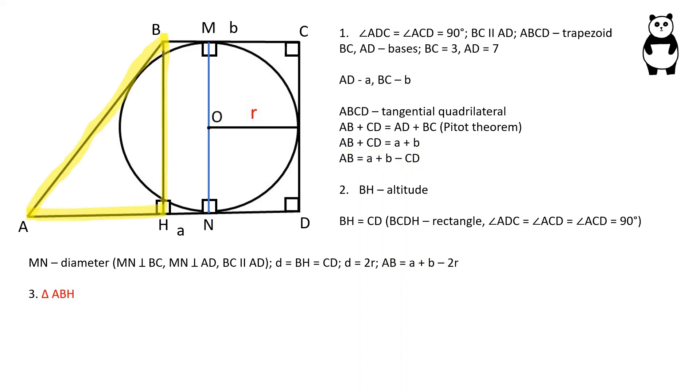Let's review the triangle ABH. Using the Pythagorean theorem, we can determine that AB squared is equal to BH squared plus AH squared. And since BH is equal to 2 times radius, and AH is equal to A minus B because these two sides are equal, AB squared is equal to 2 times radius squared plus A minus B squared.